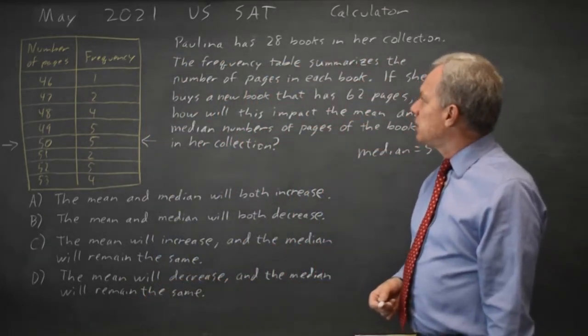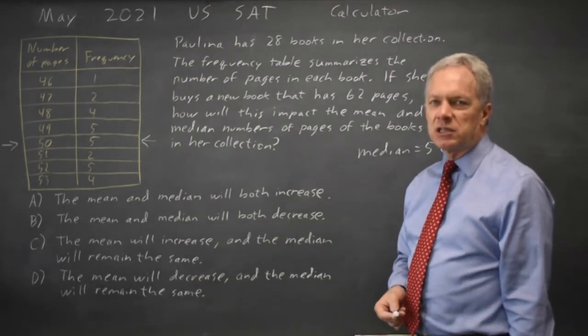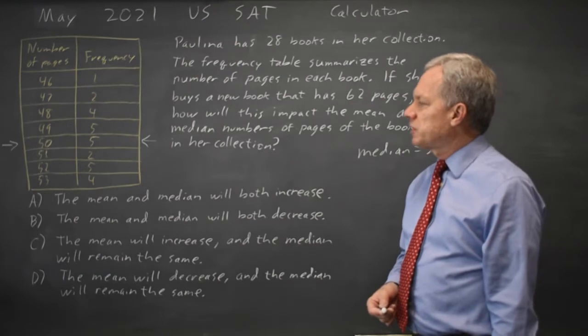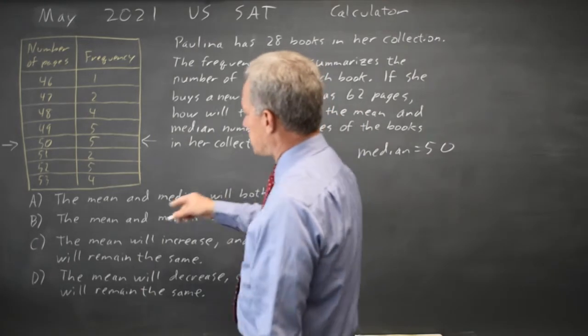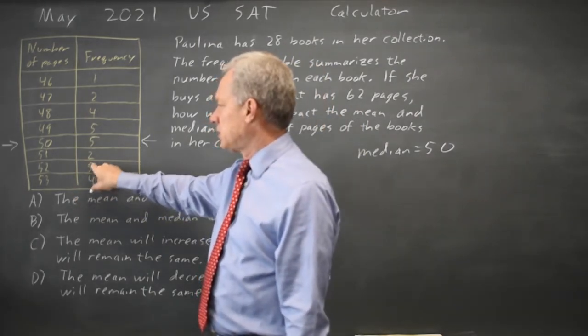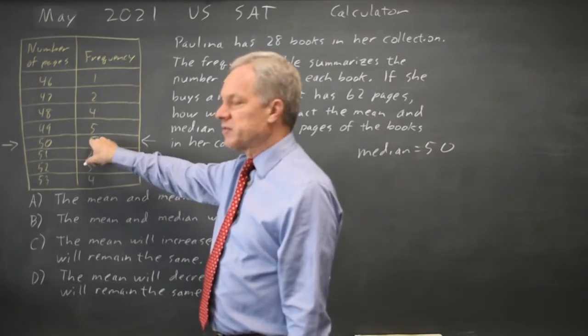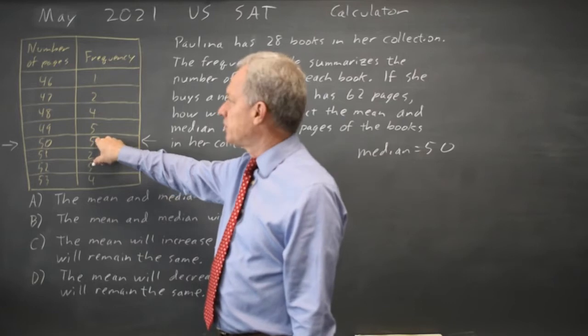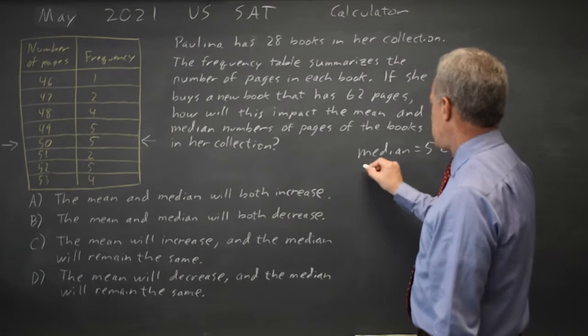The median is currently 50 and if I add in another book, the median will be the 15th from the top and the 15th from the bottom. And the new book is longer than anything else, so 1 plus 4 is 5, plus 5 is 10, and 2 is 12. The 15th, 16th, and 17th from the top are all 50, and the same with the 15th from the bottom. So the median does not change.